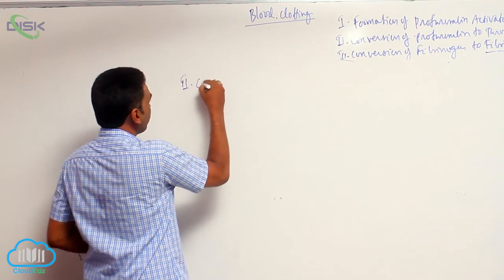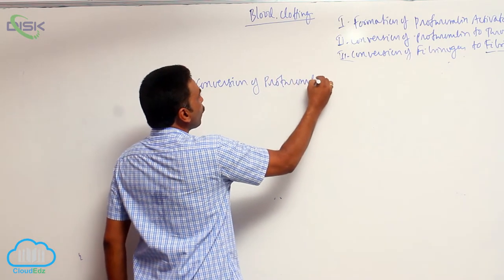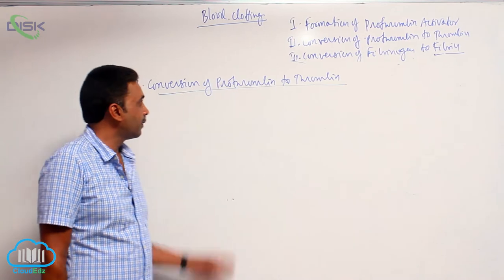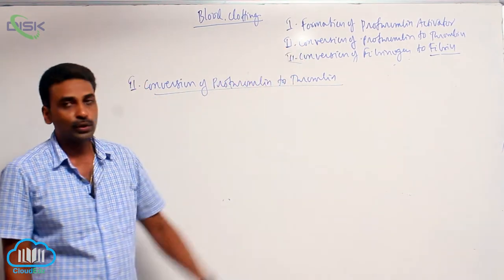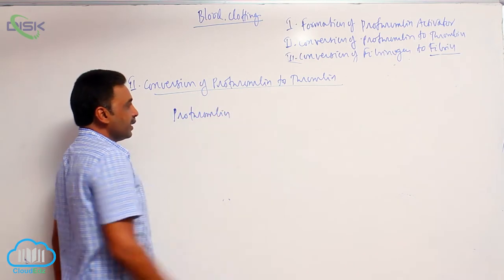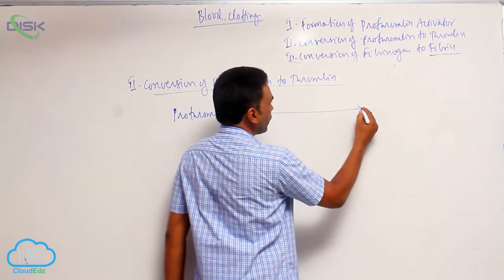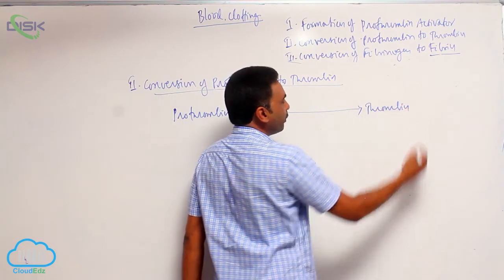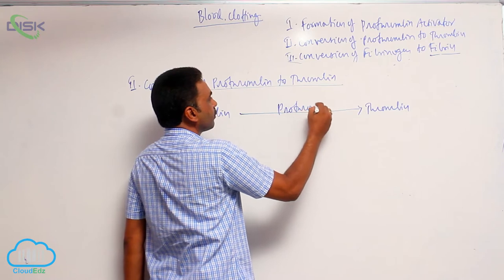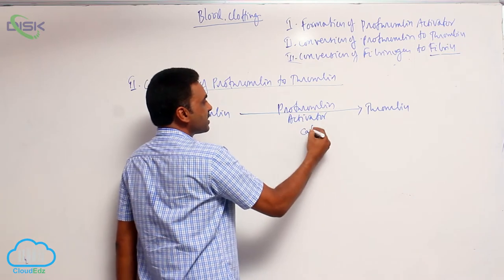The second step is conversion of prothrombin to thrombin. Prothrombin is a protein produced in the liver; it is inactive and must be converted into active thrombin. For this to happen, prothrombin activator is required, and this also requires the presence of calcium ions.